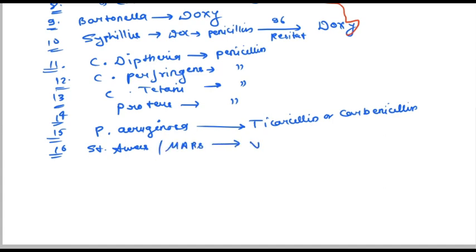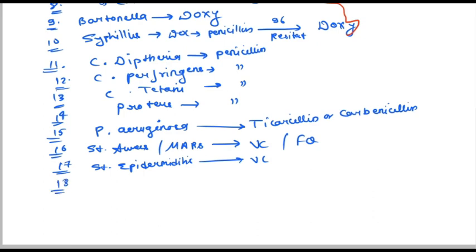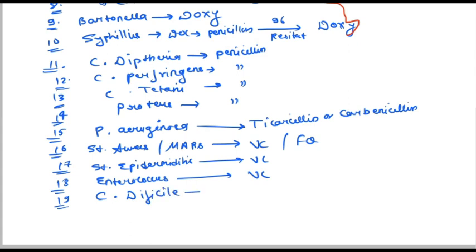For MRSA, we prescribe vancomycin and fluoroquinolones. The next bacteria is Staph epidermidis — we give vancomycin. Enterococcus, a streptococcal bacteria, also gets vancomycin. And for C. difficile, we give the same antibiotic: vancomycin.